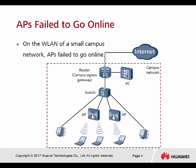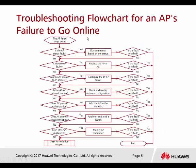On the small campus network, APs fail to go online. So right now in this campus, they detect that one of the APs doesn't work properly. This is the troubleshooting flowchart for APs. So now the APs fail to go online, and we need to check: is the AP status normal?